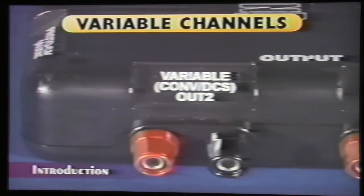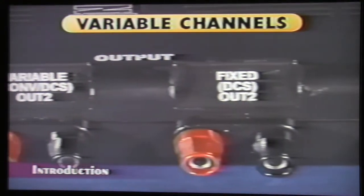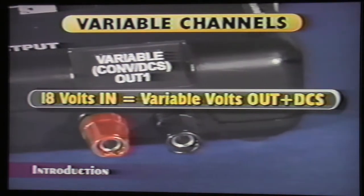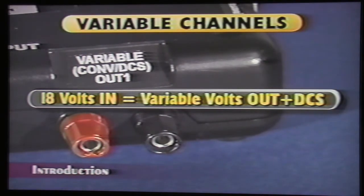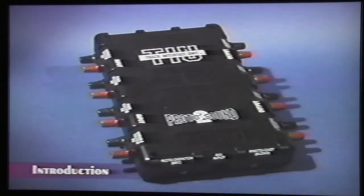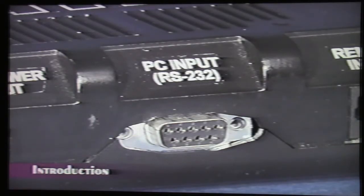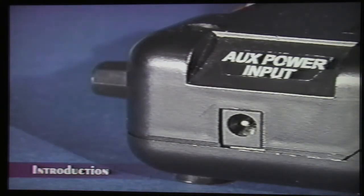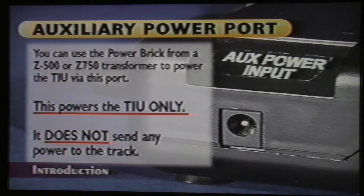The variable channels also have the DCS code added to them, but the voltage is variable within the TIU. You can put a constant 18 volts in and vary the output with the DCS handheld remote. The variable channels can be used for command or conventional operation. The TIU also has several other plugs and connectors, including the AIU input, computer input, Protocast and Protodispatch inputs, and an auxiliary power input which powers the TIU itself but does not provide power to the track.